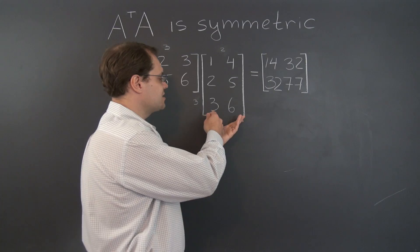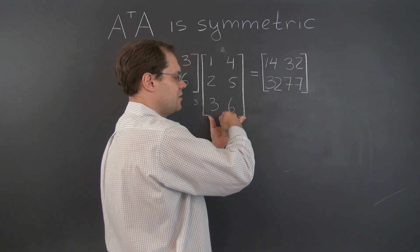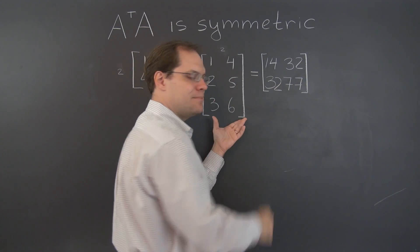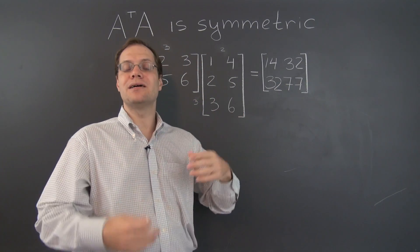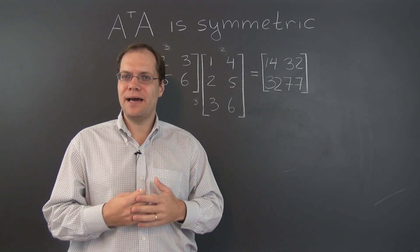And if the matrix A had, let's say, ten columns, doesn't matter how tall they are, the resulting matrix will be ten by ten. Because among ten columns, you have a hundred combinations of pairs.